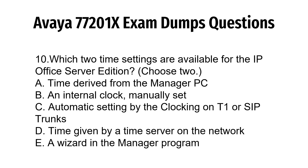Question 10. Which two time settings are available for the IP Office Server Edition? A. Time derived from the manager PC. B. An internal clock manually set. C. Automatic setting by the clocking on T1 or SIP trunks. D. Time given by a time server on the network.